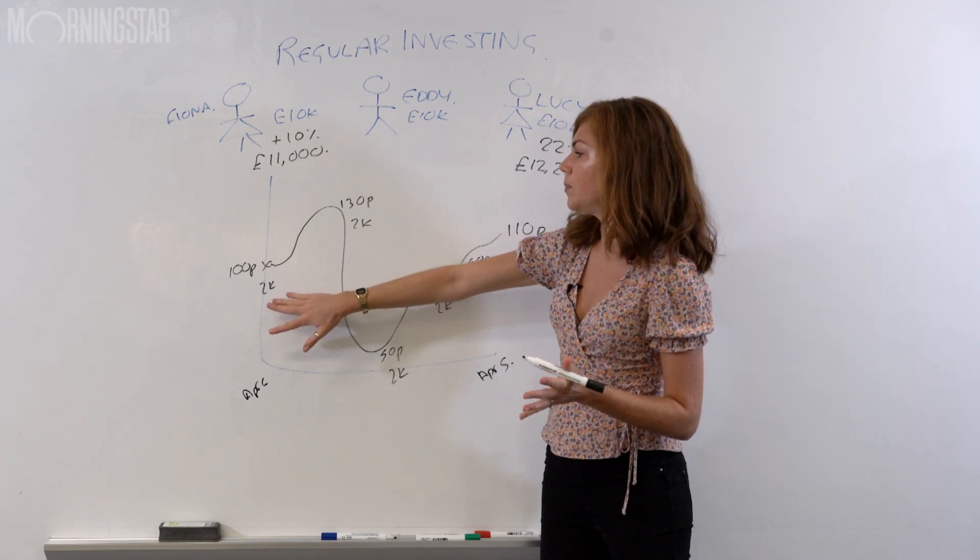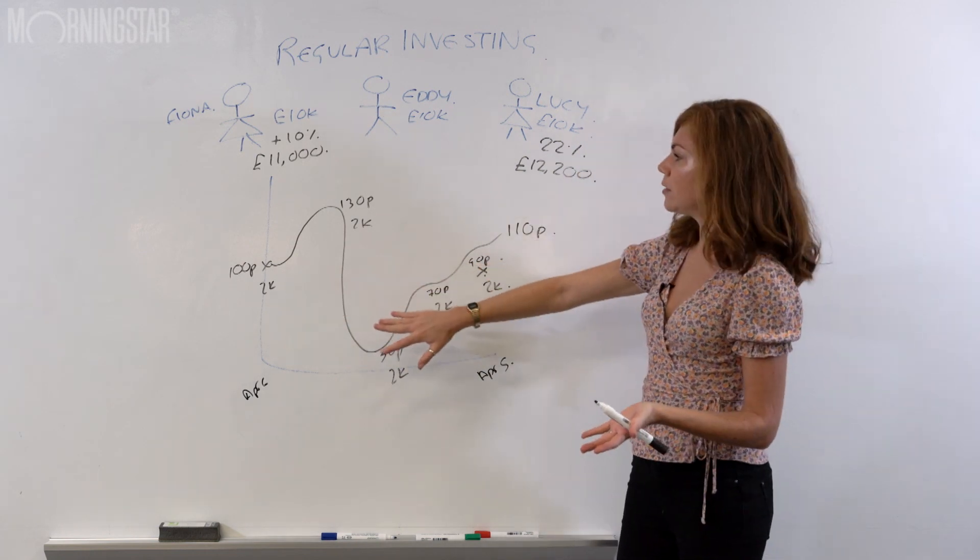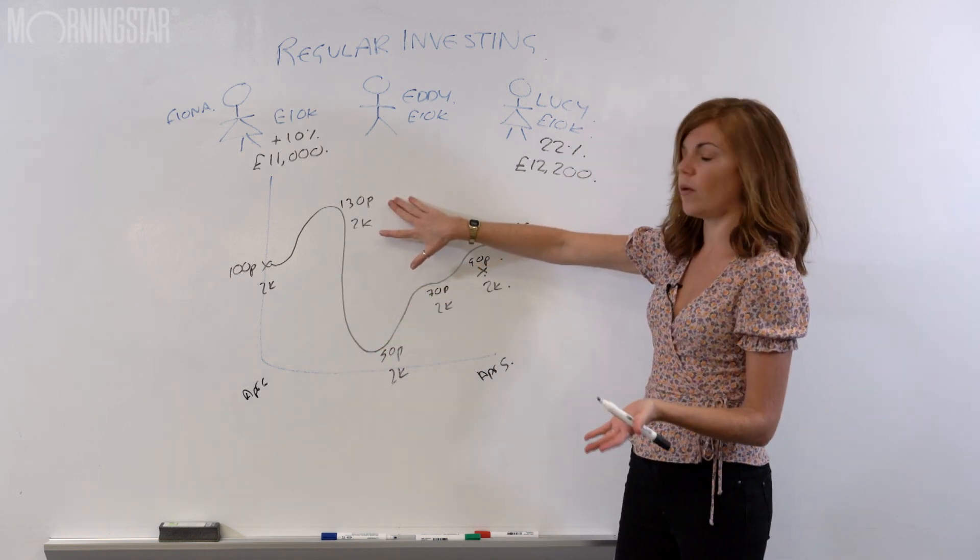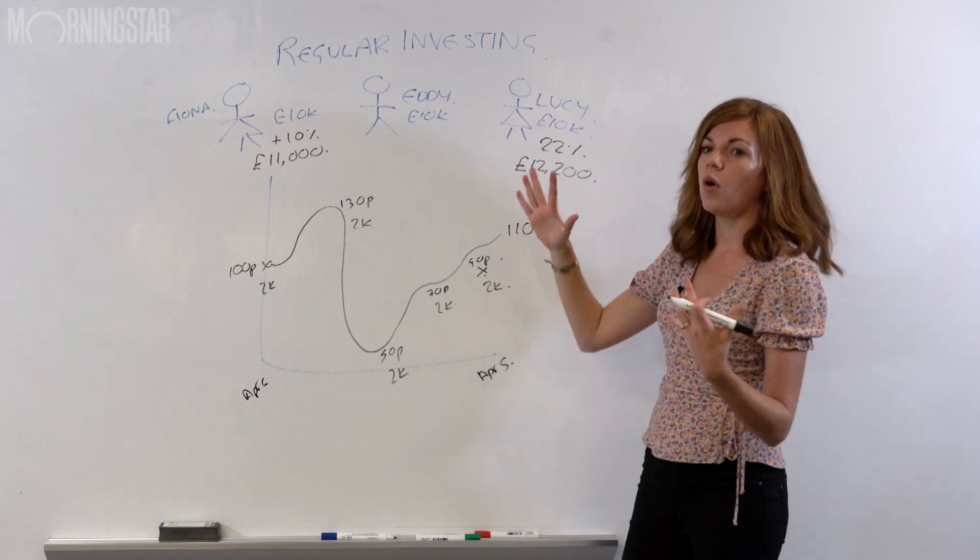This bit of the money, the bit that went in at 100p grew by 10%. The bit that went in at 130p didn't do so good, obviously. This bit went up 120%. All told though,